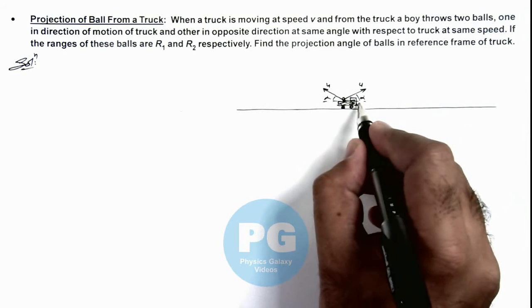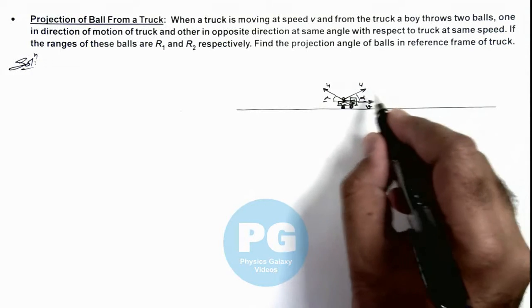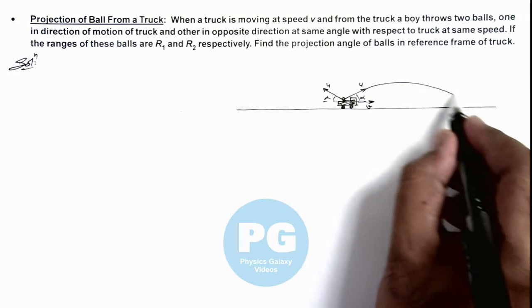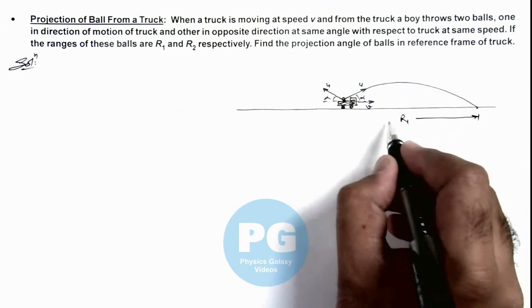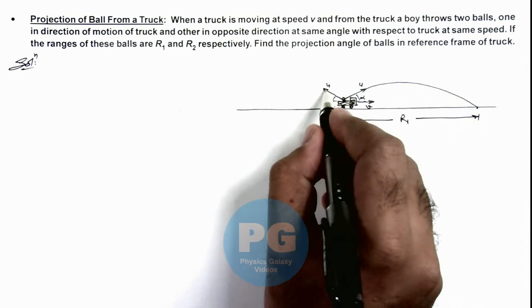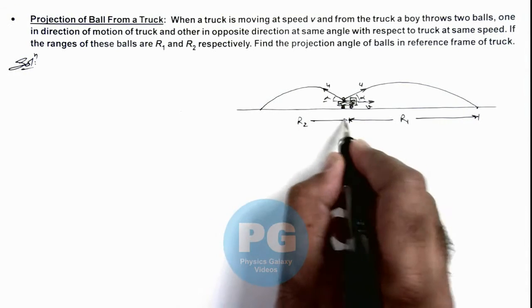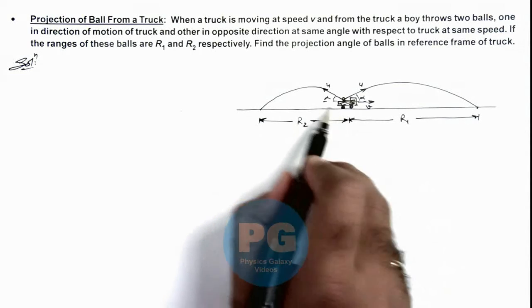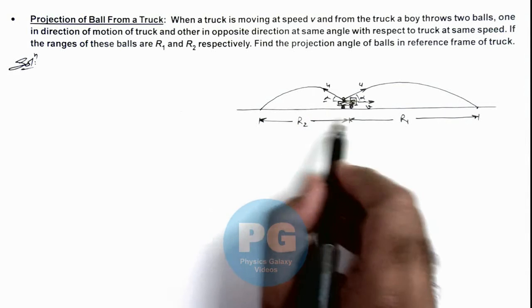Obviously if the truck is moving with a speed v, the ball which is thrown in forward direction will have more relative speed with respect to ground so it will cover larger range which is given as r1. And the one which is thrown backward will be having a smaller range, and this range is given as r2. This range is small because the ball will also have truck velocity in forward direction so projection speed with respect to ground will be less.